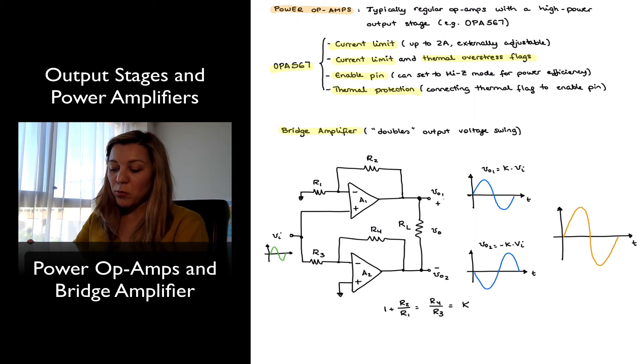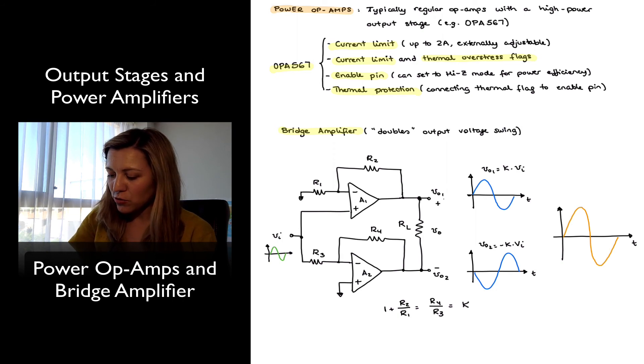Because of the complementary nature of the two waveforms, we can see that if we take the differential output voltage, Vout1 minus Vout2, what we will end up with is a sinusoidal signal which has twice the amplitude of the individual signals Vout1 and Vout2.